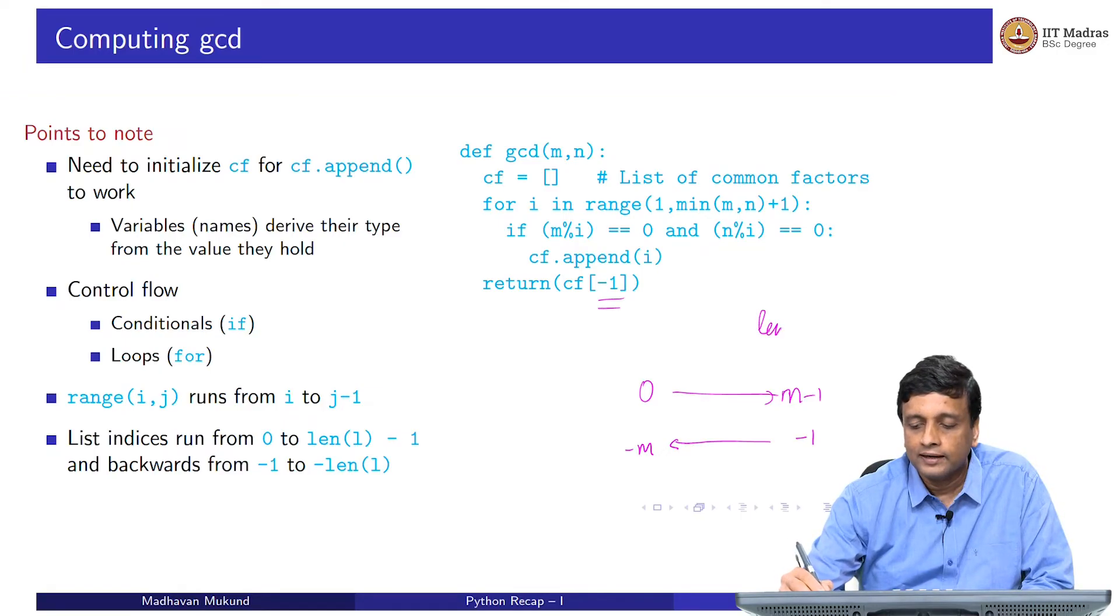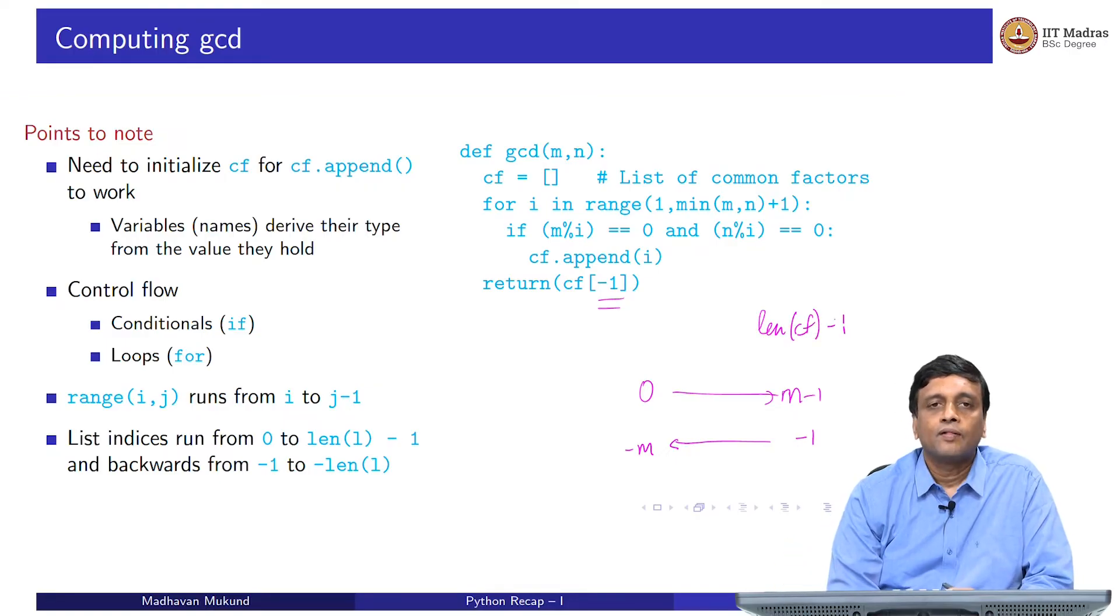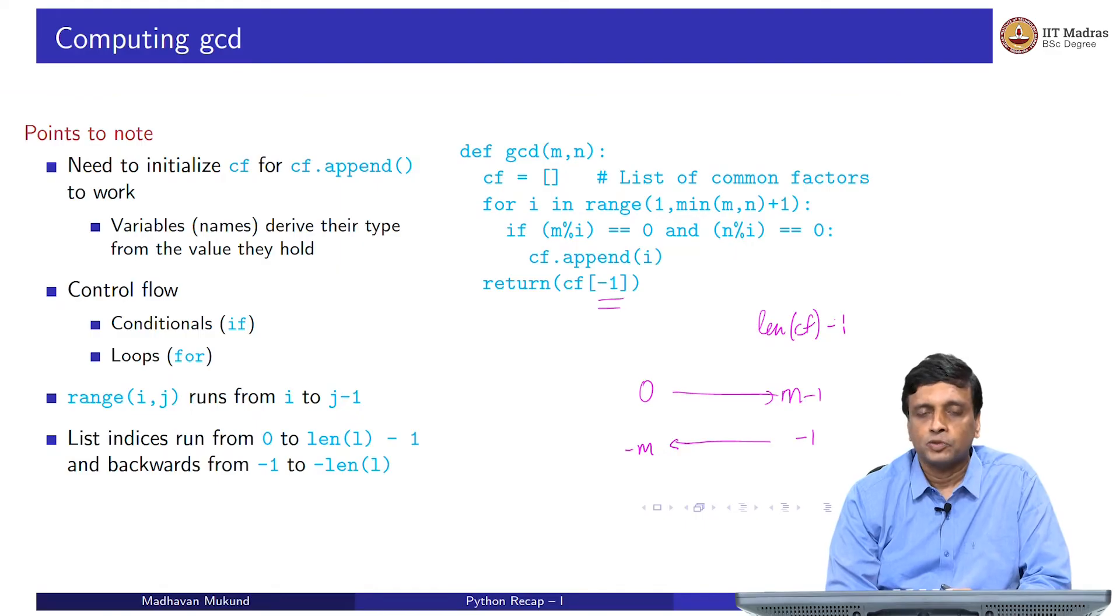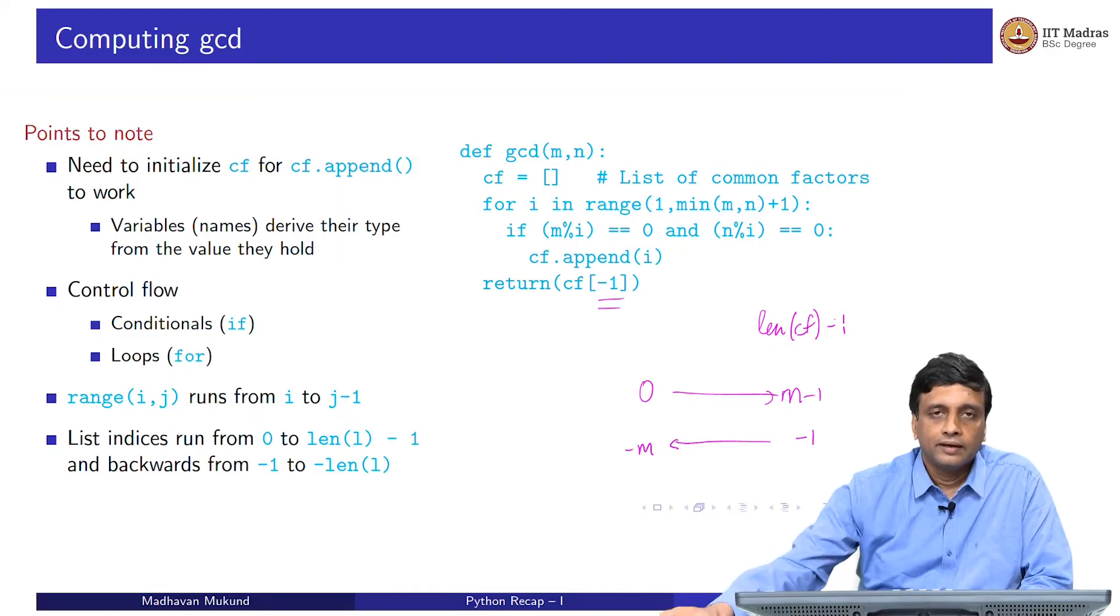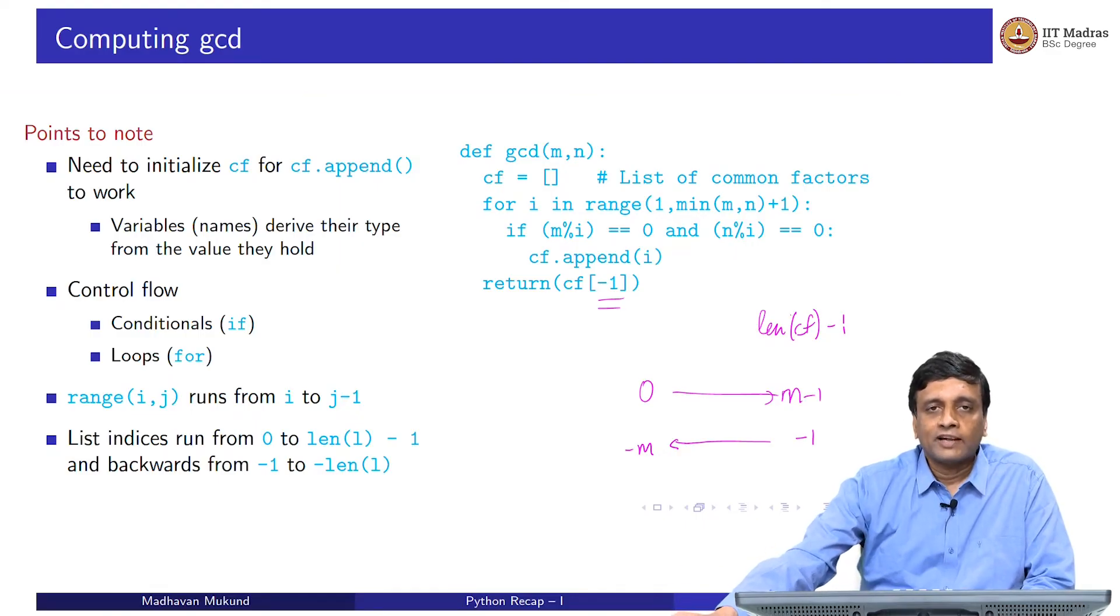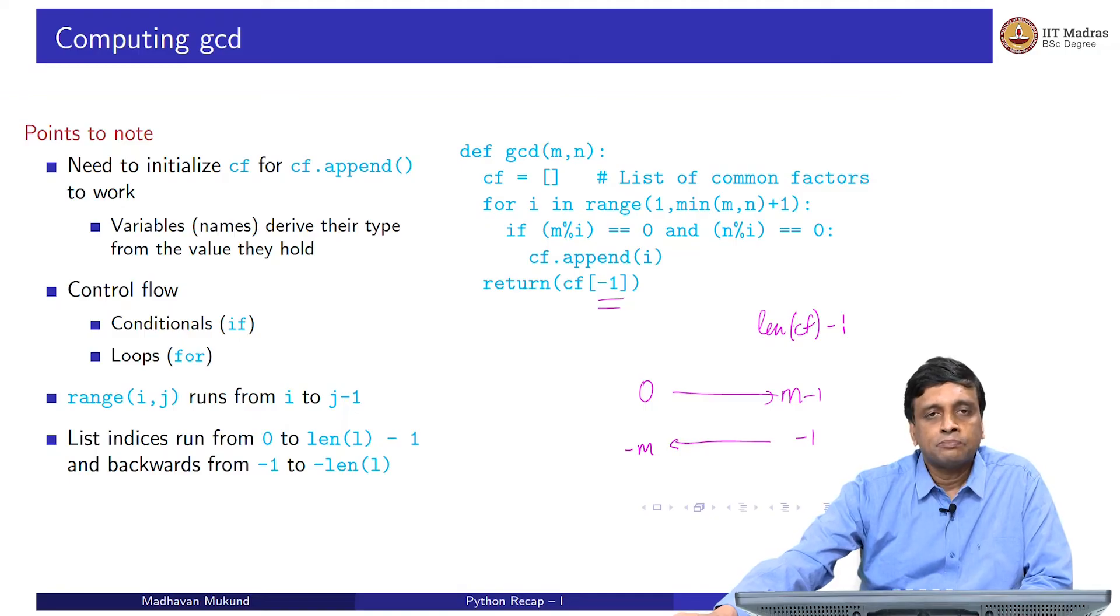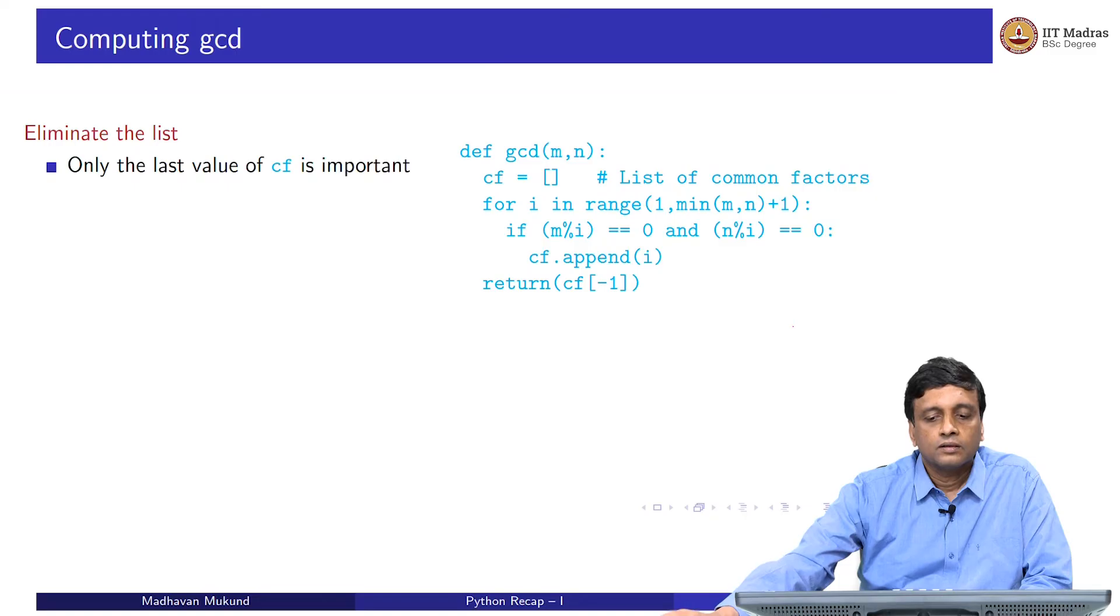This is the same, we could have said length of cf minus 1, this would have given us the same position in the list. But obviously, writing minus 1 alone is much less cumbersome than writing length of cf minus 1. These are some interesting things which we have captured in this very simple function, which captures GCD in a very naive way.